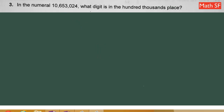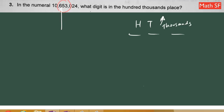Problem number 3: in the numeral, what digit is in the hundred thousandth place? Let's go to the thousandth group, which is located here. The pattern repeats: ones, tens, hundreds, then thousands, ten thousandths, hundred thousandths. The one in the middle is the ten thousandth place and the one far to the left is the hundred thousandth place. Therefore the digit in the hundred thousandth place is 6.